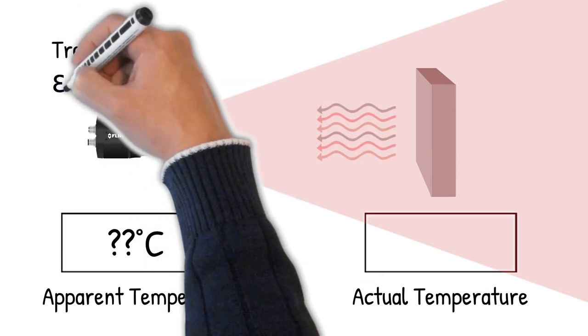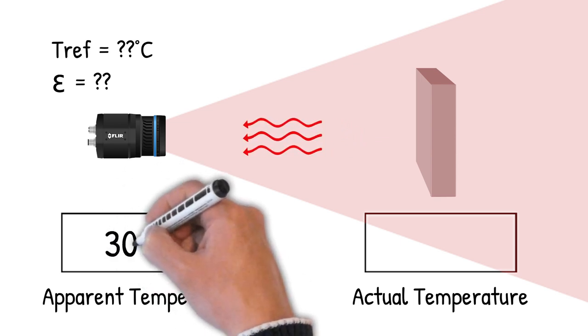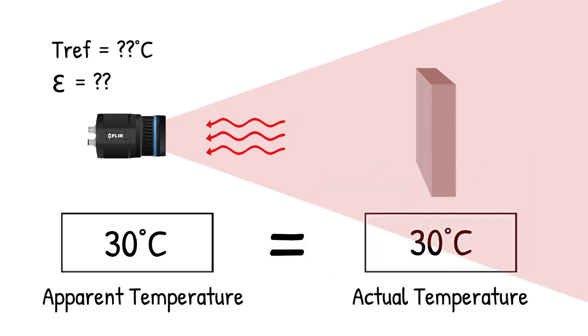The camera user must tell the instrument what makes up the total radiation, so the instrument can calculate and report an apparent temperature close to the actual temperature. Most infrared cameras have inputs for target emissivity and reflected temperature.